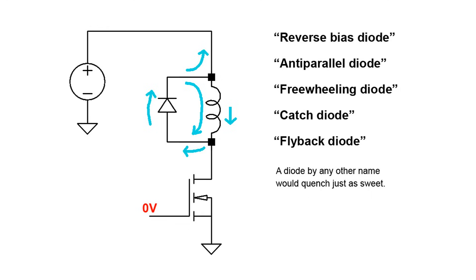Sometimes this diode is called a reverse bias diode, anti-parallel diode, freewheeling diode, catch diode, or flyback diode. And no matter what you call it, it's just a diode that lets inductive energy take a return path somewhere safe.